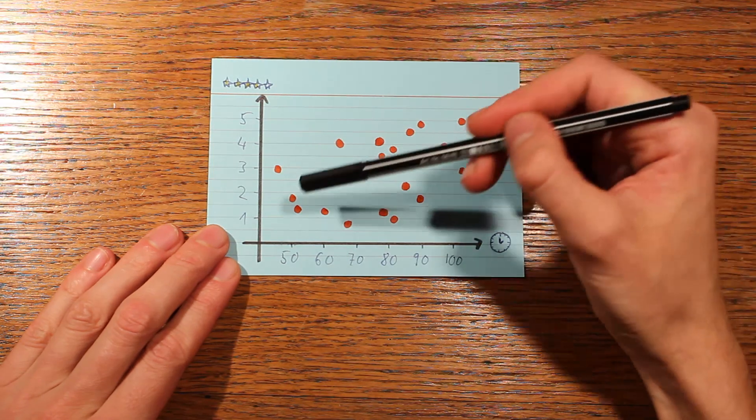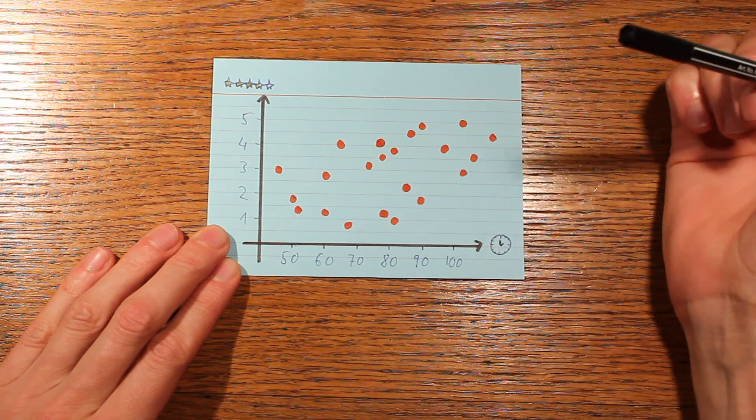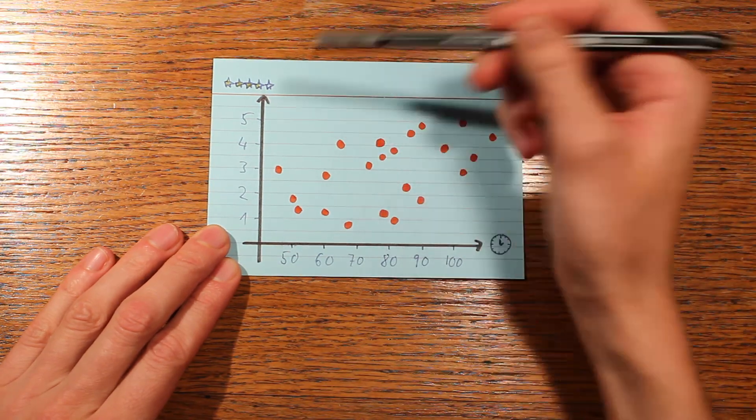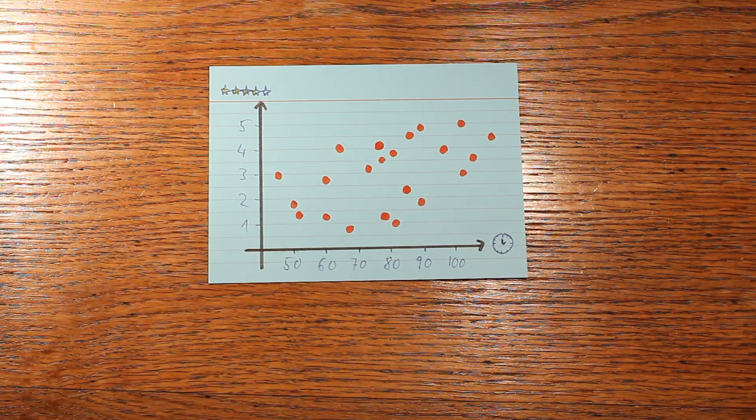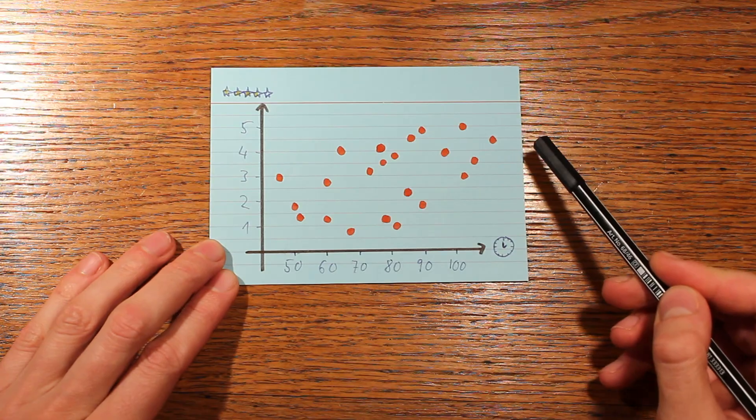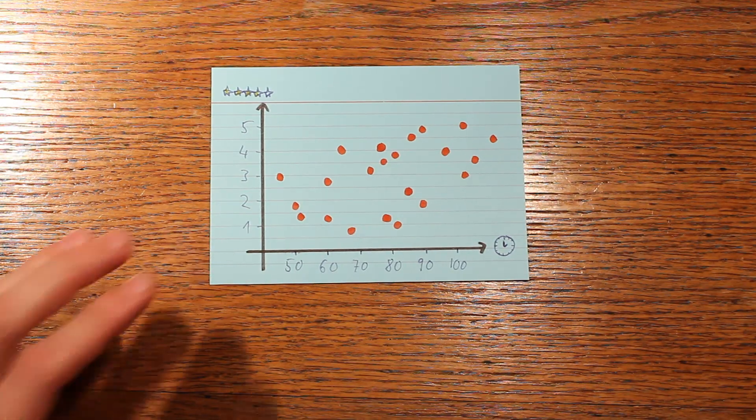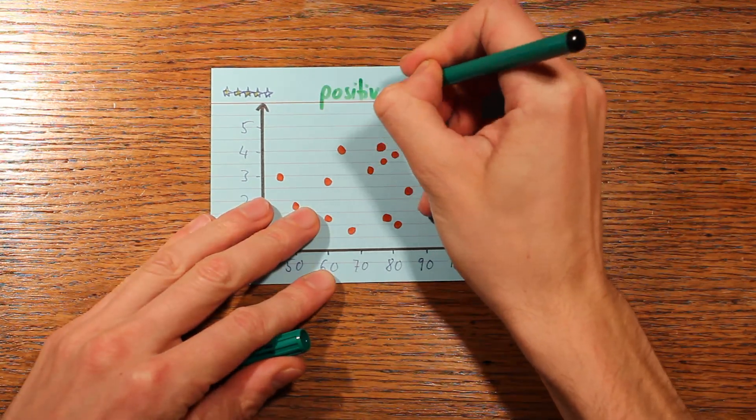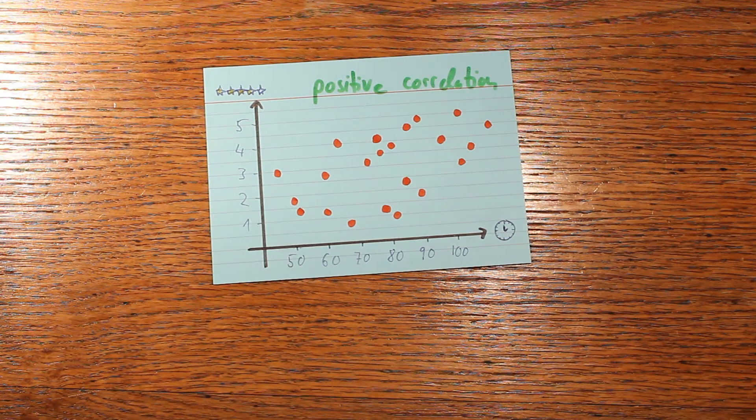This movie here, for example, is really bad, it just has 1.2 stars. And this movie here is really good, it has 5 stars. You can kind of see that, at least according to this dataset here, the longer movies tend to get the higher ratings. And in that case we'd say there's a positive correlation between movie length and rating.